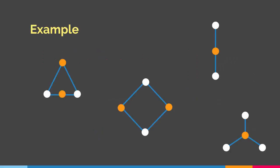Let me give you some examples. As you can see, I have colored some of the vertices orange and the others white. Every edge in these examples connects two vertices where one of them is white and the other one is orange — for example, this edge connects a white vertex to an orange vertex.